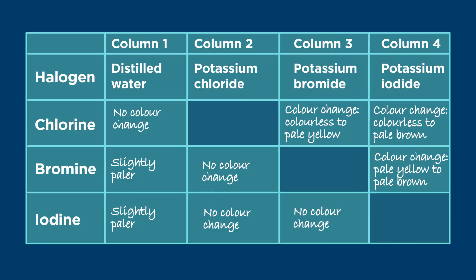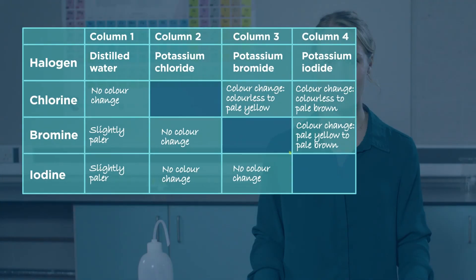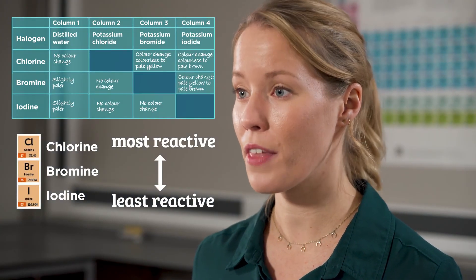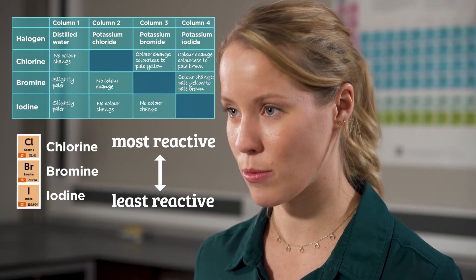If we look at our completed results table, we can see that chlorine has displaced bromine and iodine from their compounds, while bromine has displaced iodine from its compound. However, iodine has not displaced either of the other halides. Therefore, the order of reactivity must be chlorine, then bromine, then iodine. So the reactivity decreases as we go down the group.